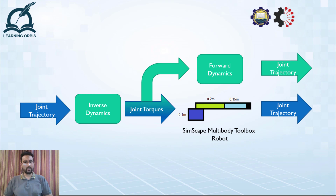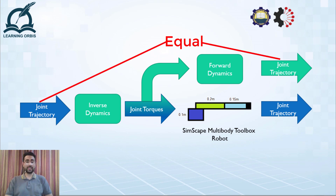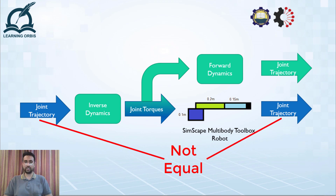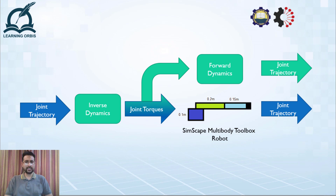This is what we are going to implement today in MATLAB using the Robotic System Toolbox and Simscape toolbox. We will see that the torques generated by the inverse dynamics block, when fed to the forward dynamics block, will produce the same desired trajectory. But when the same torques are provided to the physical system robot modeled in the Simscape Multibody Toolbox, the robot will not produce the desired trajectory — because there are unmodeled disturbances that the Robotic System Toolbox never accounts for. At that point we would need a control system, but that will be the topic of a different video.